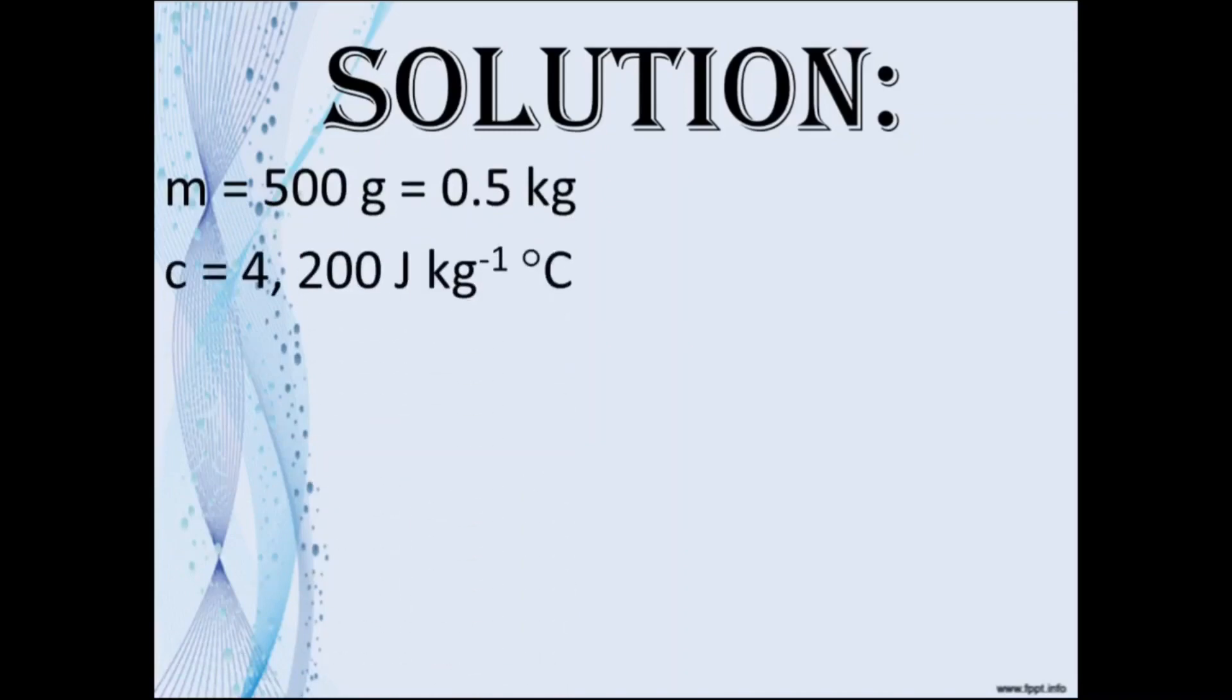The specific heat capacity of water is 4200 joules per kilogram degree Celsius. The change in temperature, since it's from 30 up to 100, is 70 degrees Celsius. Why does it go up to 100? Well, as you should remember, the boiling point of pure water at sea level is 100 degrees Celsius.